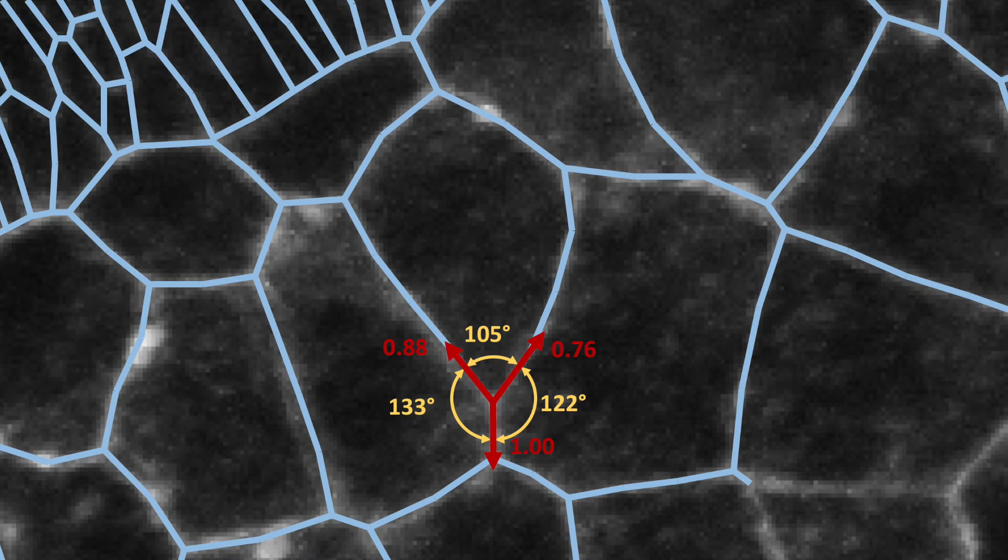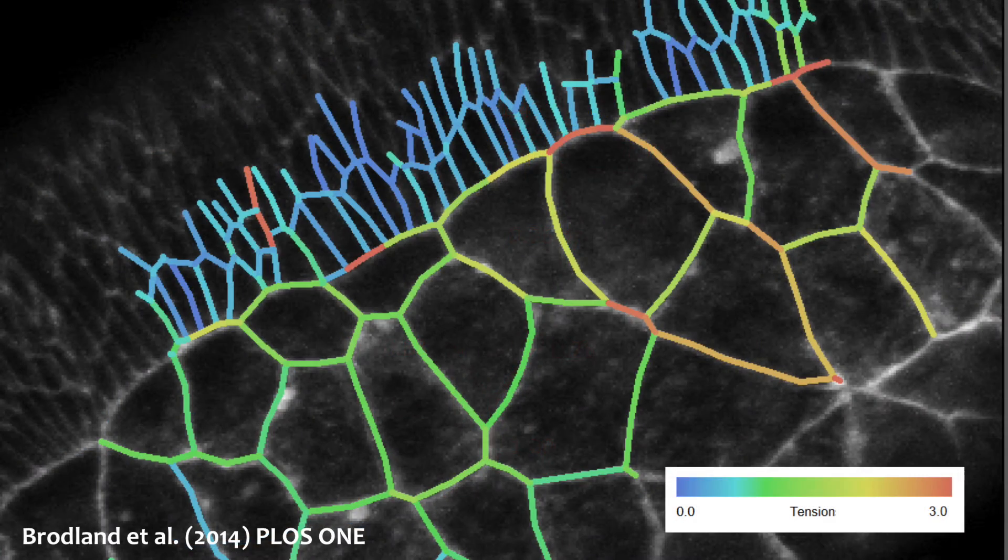If we then assume the tension in any given edge to be constant along its length, we can repeat the process until all the edges of interest are analyzed and a color-coded edge tension map constructed.